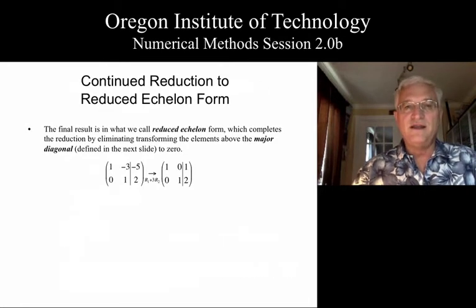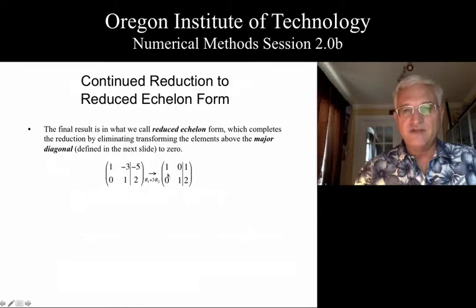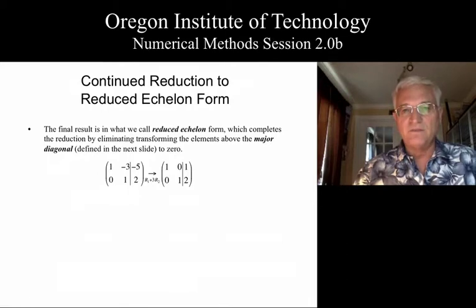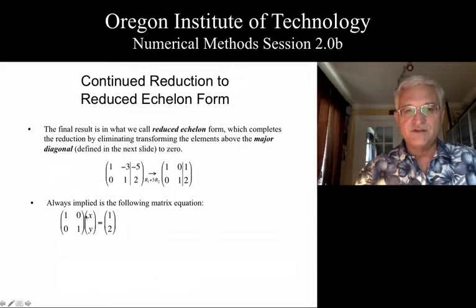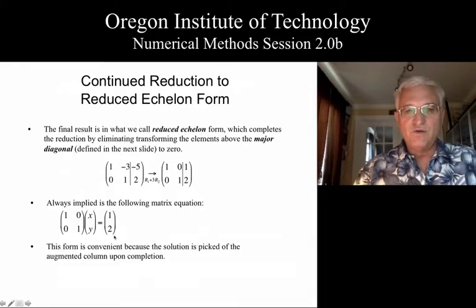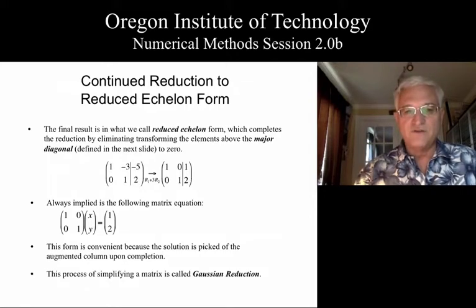Okay, but we did, so let's continue on, and we want to move on to what we call reduced echelon form. And this will complete the entire process because we end up with not only getting a major diagonal of ones, but every other matrix position has become a zero. From this, we can pick off the solution for x and y, because this solution is equivalent to this matrix equation right here. 1 times x plus 0 times y equals 1. That means x equals 1. And similarly, y is equal to 2. So we have a convenient form where we can pick off the solution, and that whole process will be called Gaussian reduction.